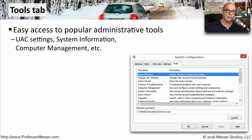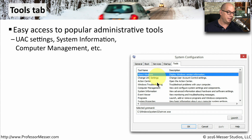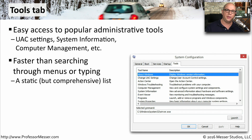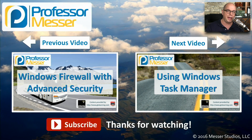If you're looking for a utility that's not available inside System Configuration, you can go to the Tools tab, where there's a list of popular administrative tools. These include things like UAC settings, Windows troubleshooting, Computer Management, System Information, and other utilities as well. This is a static list, so you can't add anything else to it, but it provides a very quick way of starting these utilities without having to go outside of System Configuration and start them manually.